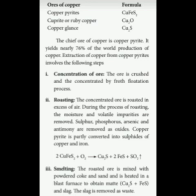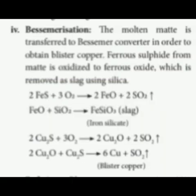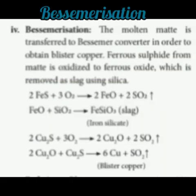To recap: the first step is concentration of ore, the second is roasting, and the third is the smelting process where the roasted ore is mixed with powdered coke and sand and heated in a blast furnace. This produces matte — a mixture of Cu₂S and FeS. The slag, where iron combines with sand (SiO₂) to form FeSiO₃, is removed as waste.